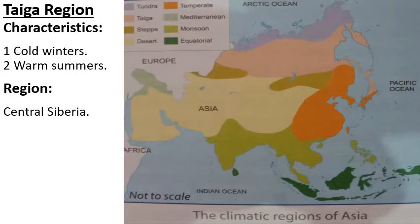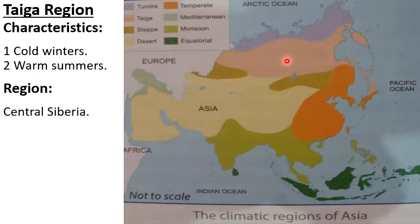The next region is the taiga region, shown by peach color here. This area is of central Siberia. Central Siberia has a taiga type of climate. The characteristics are cold winters and warm summers.